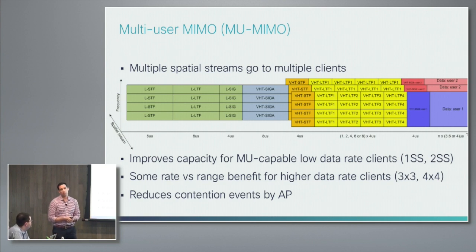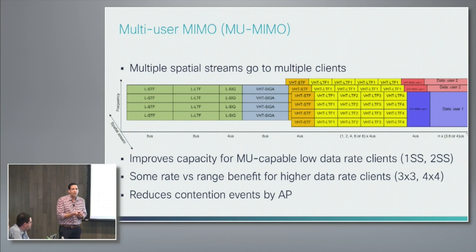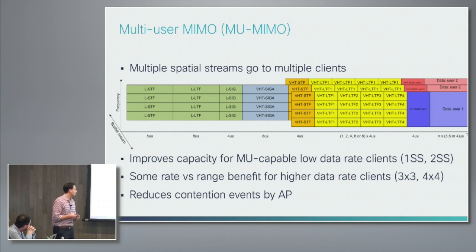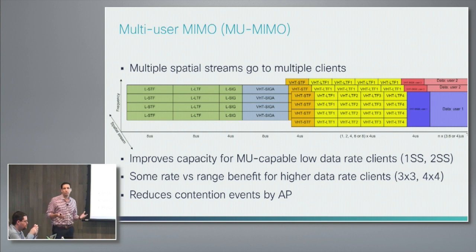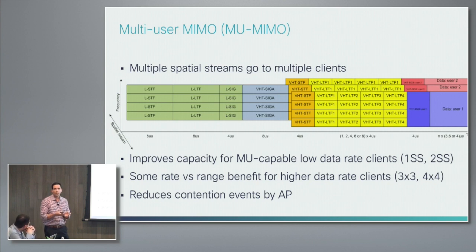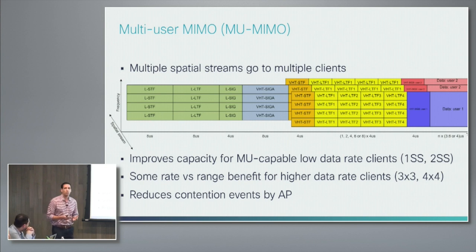Instead of using multiple spatial streams to increase throughput to a single client, why not share the love? Send one spatial stream to one client and another to another client — clients that on their own aren't capable of receiving three or four spatial streams, but can be included in a three or four spatial stream packet receiving just a single spatial stream. There's also some claim that you can get better rate versus range for higher throughput clients, like three-by-threes and four-by-fours, because you're sending fewer spatial streams to each. But the main focus of multi-user MIMO is bringing up overall capacity when there's the presence of lower data rate one-by-ones and two-by-twos.